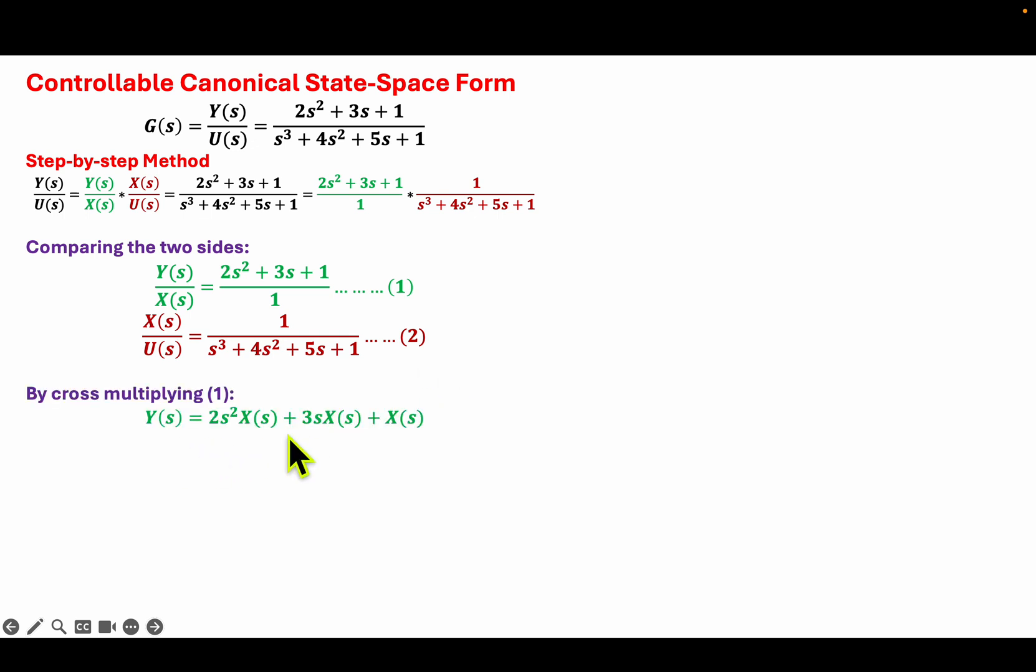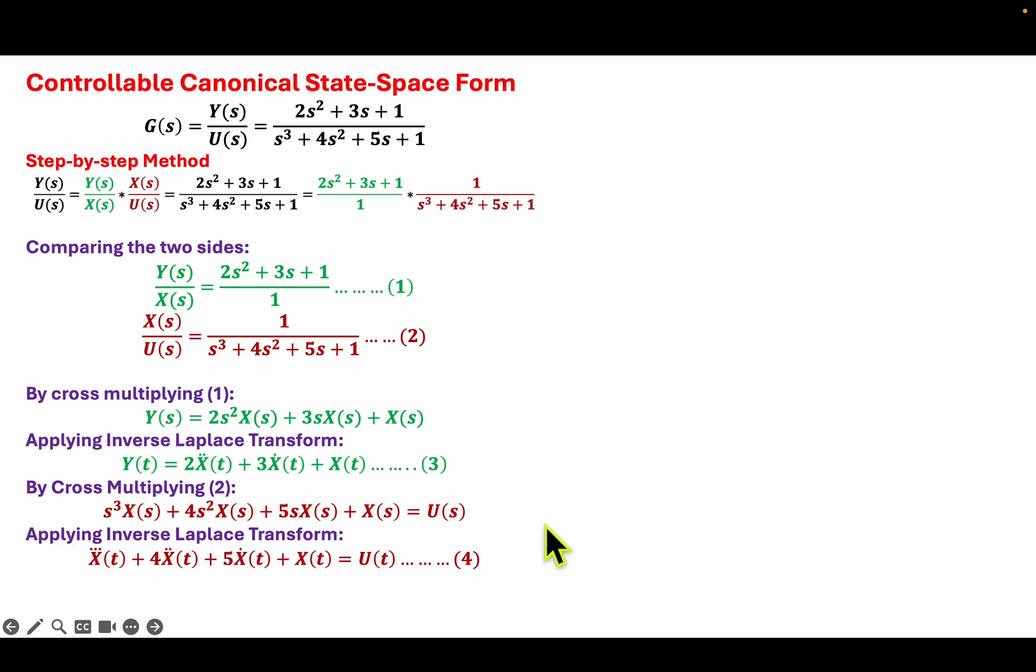So cross-multiplying 1, I will end up with this equation and converting it into time domain, that is taking the inverse Laplace transform, I will end up with equation 3. So I will do the same thing for equation 2. I will cross-multiply and then take the inverse Laplace transform in order to convert it into time domain and I will end up with equation 4.